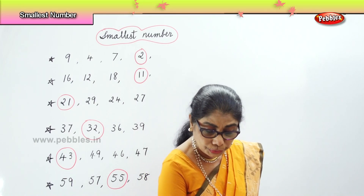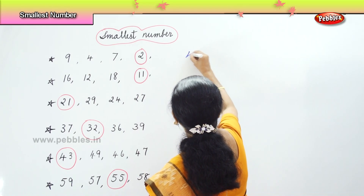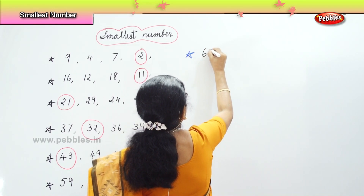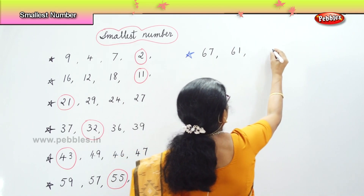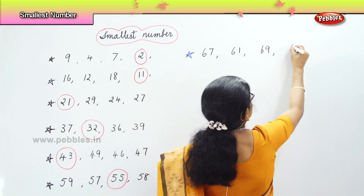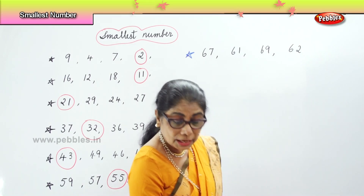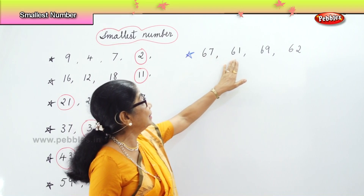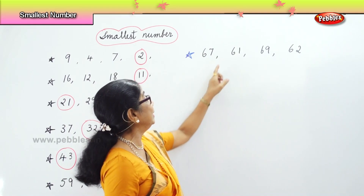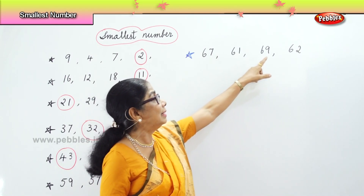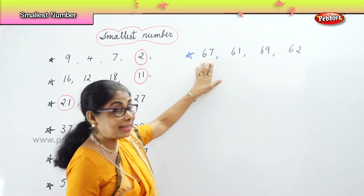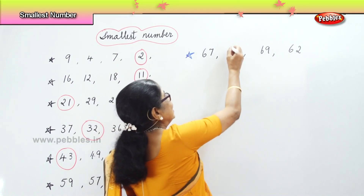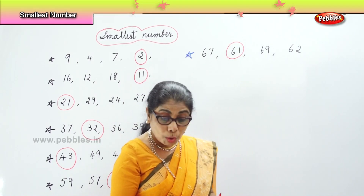Okay, another lot of exercise. Now, 60, 67, 61, 69, and 62. All numbers in 60s. Look at the first set — all 6s. Now let's look at the second number in each: 7, 1, 9, and 2. So you have 67, 61, 69, 62. Which is the smallest? 61. 61 is the smallest among that.